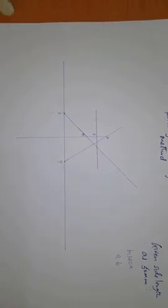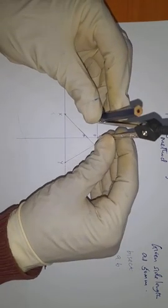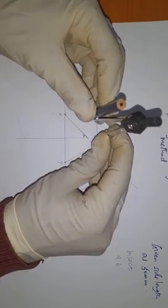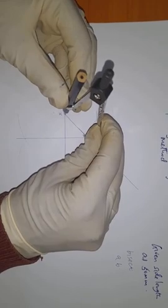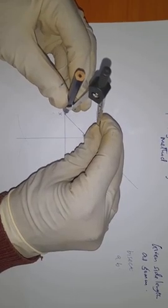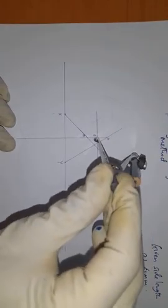Point O is going to be our center for the first circle that will circumscribe our regular pentagon. Set your compass from O to A, and then you draw that circle.